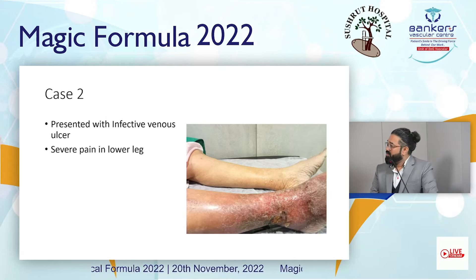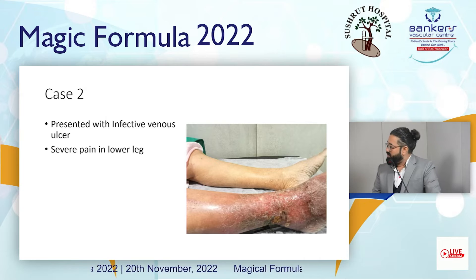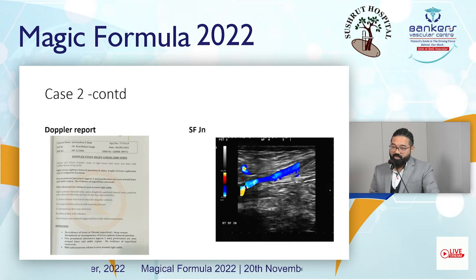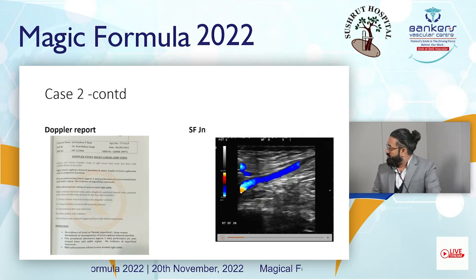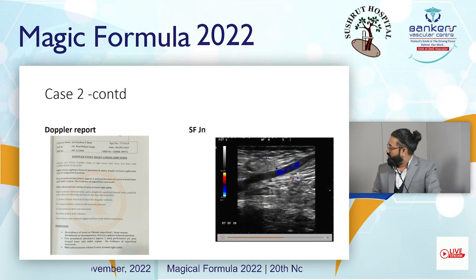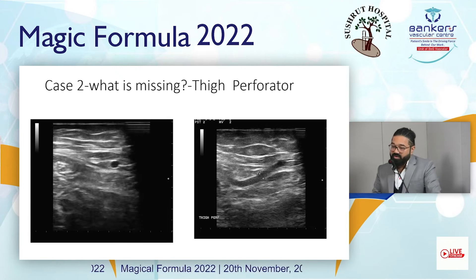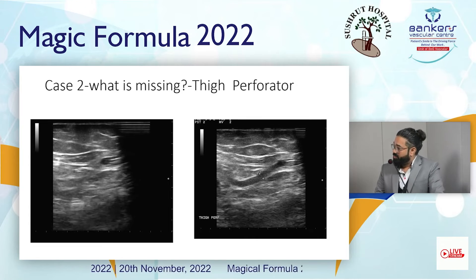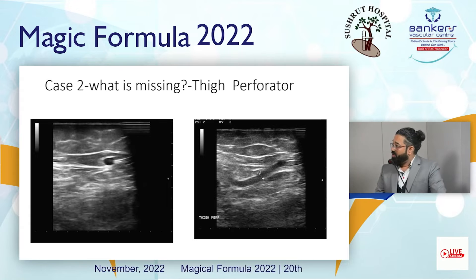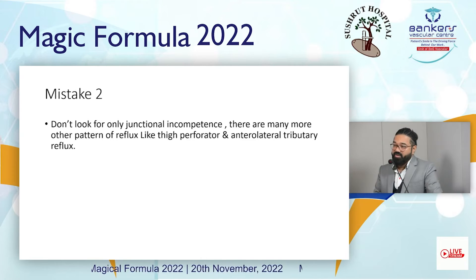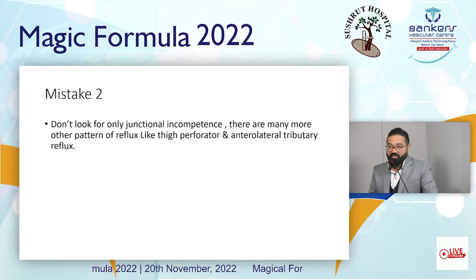Now we discuss Case 2. The patient presents with infective ulcers — you can see discoloration of the skin and the patient has severe pain in the leg. The doppler report stated the saphenofemoral junction was competent, but there was no mention of perforators. If we scan the doppler for the saphenofemoral junction it is competent and shows normal flow. But if we trace the great saphenous vein downward, there is a large thigh perforator, as seen in the second stored image. Perforators are also important — not only whether the saphenofemoral junction is competent, but also check for thigh perforators and anterolateral tributary refluxes. This is the second common mistake made by sonologists.